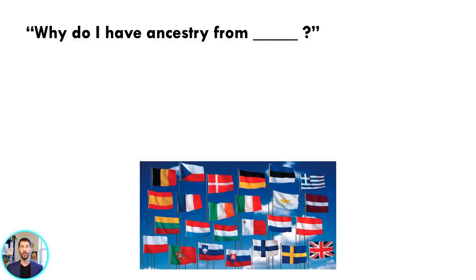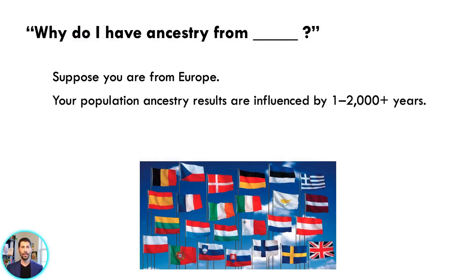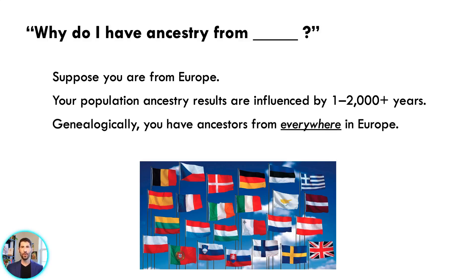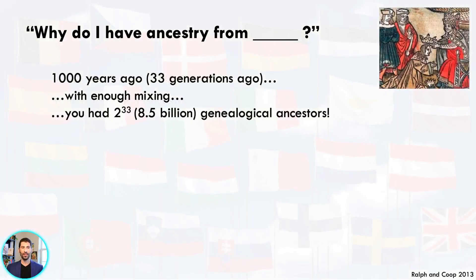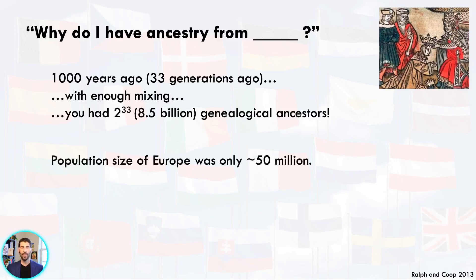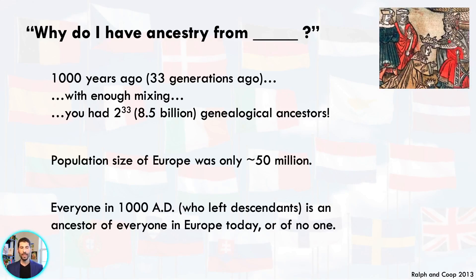Let's perform a thought experiment. Suppose you're from Europe, and your population ancestry results are influenced by between one and 2,000 years or maybe more. Genealogically, you have ancestors from everywhere in Europe — and yes, I literally mean that. A thousand years ago, which is about 33 generations, with enough mixing, you had 2 to the 33rd power, or 8.5 billion genealogical ancestors. But the population size of Europe was only about 50 million people. That means everyone in 1000 AD who left descendants is an ancestor of everyone in Europe today, or of no one.